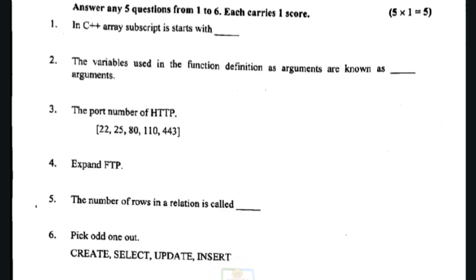Expand FTP. The number of rows in a relation is called cardinality. We have to study all of them. This is a simple, normal question — study it a little bit.